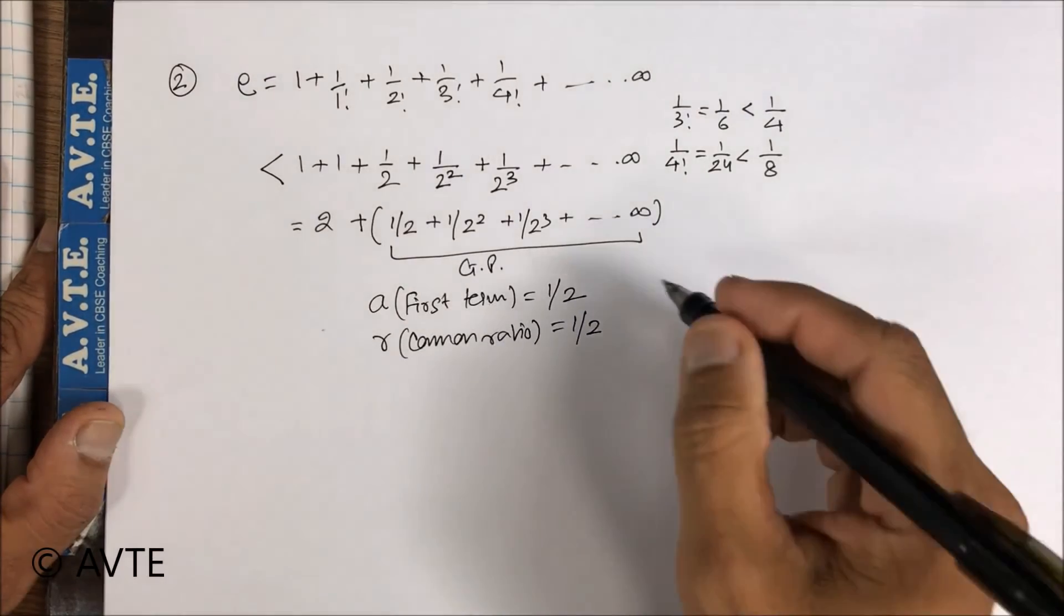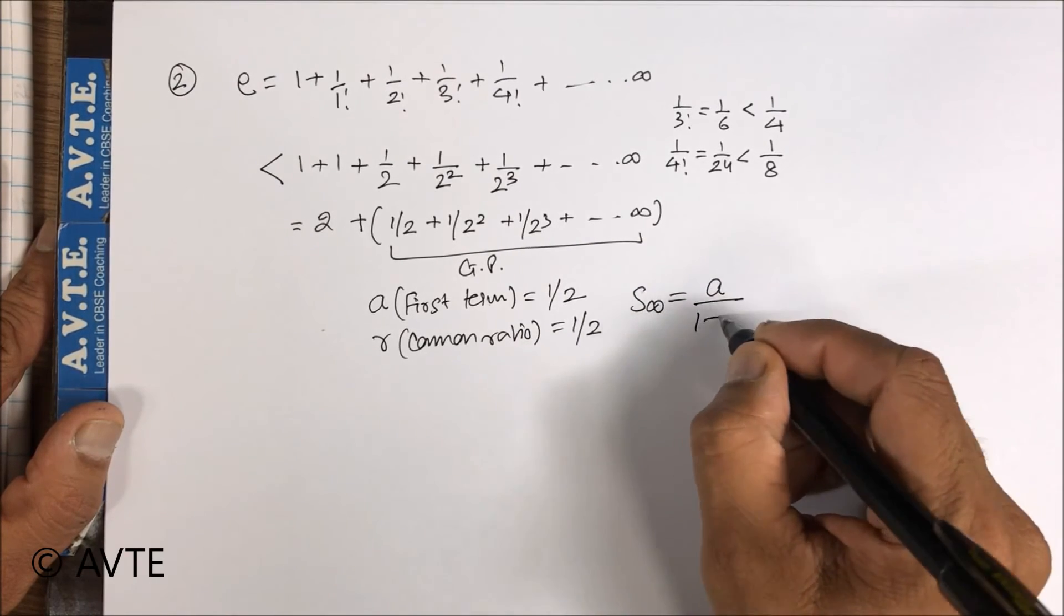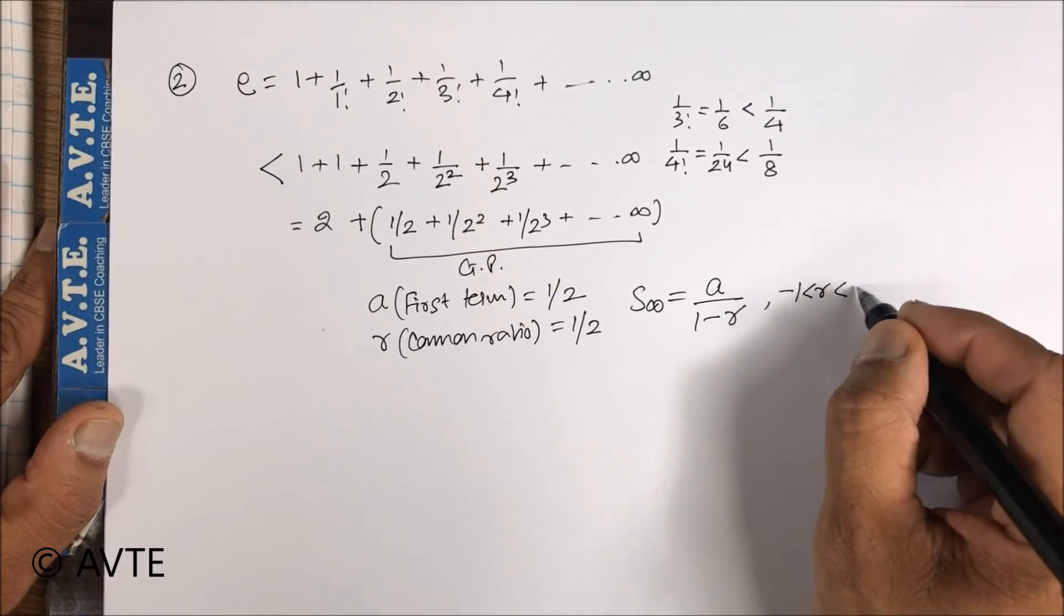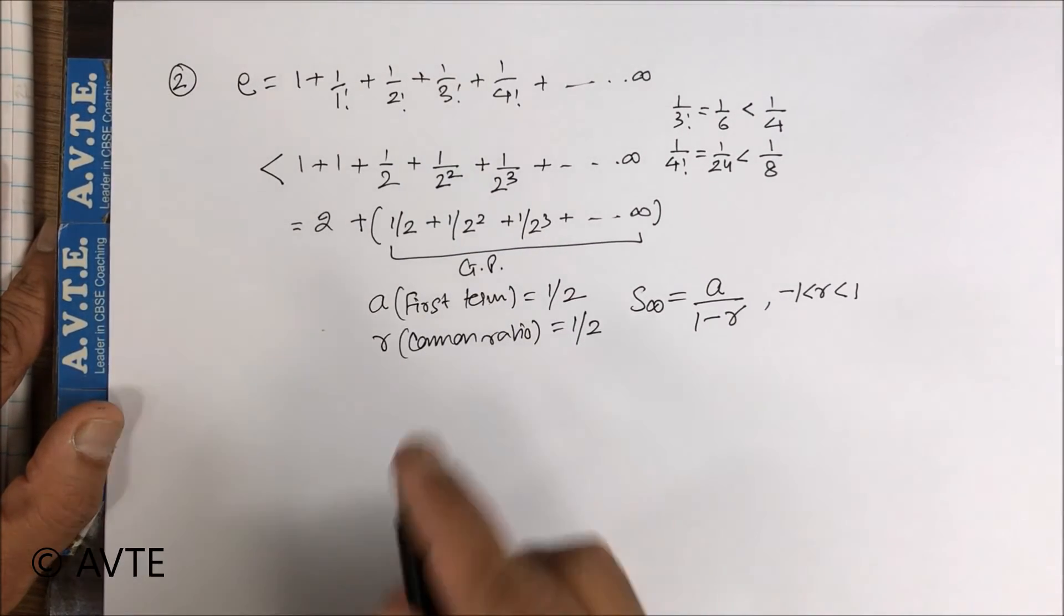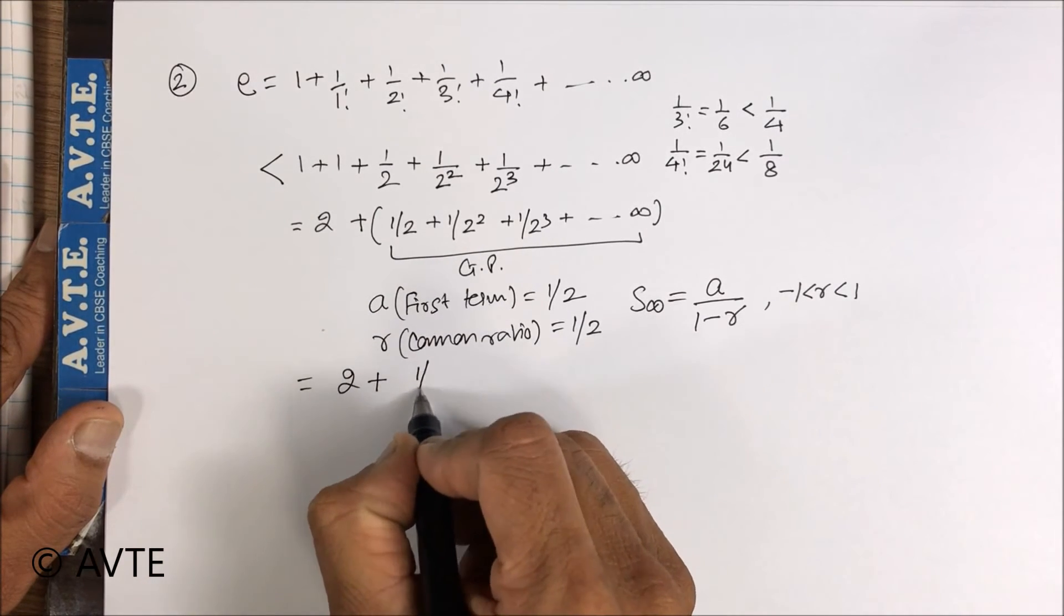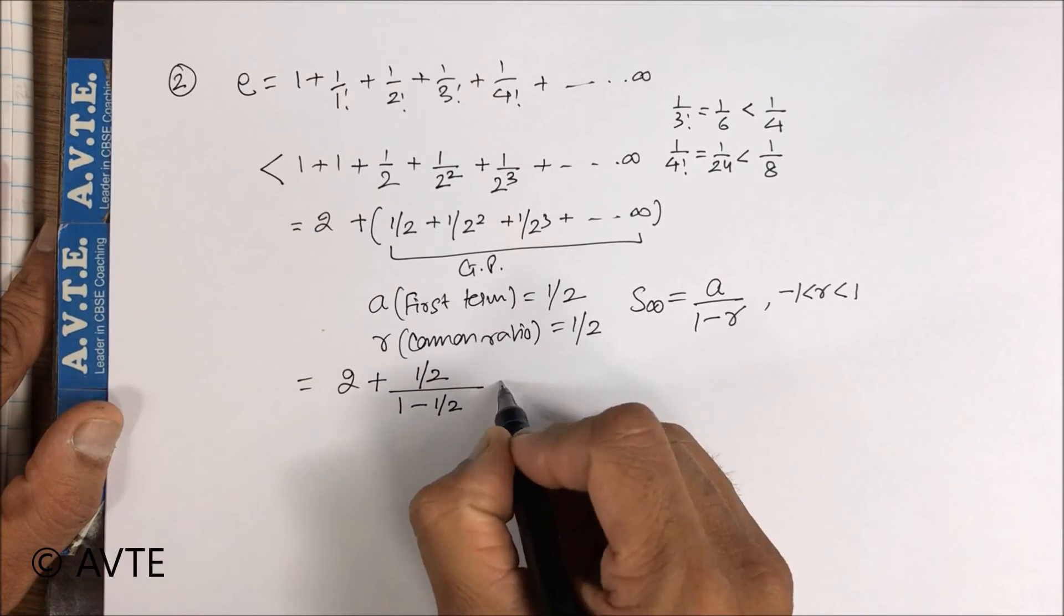Now if I apply sum to infinity which is a over 1 minus r, and the condition is that r should be from minus 1 to 1, if I now apply the sum to infinity it turns to 1 upon 2 over 1 minus 1 upon 2, which is 1.